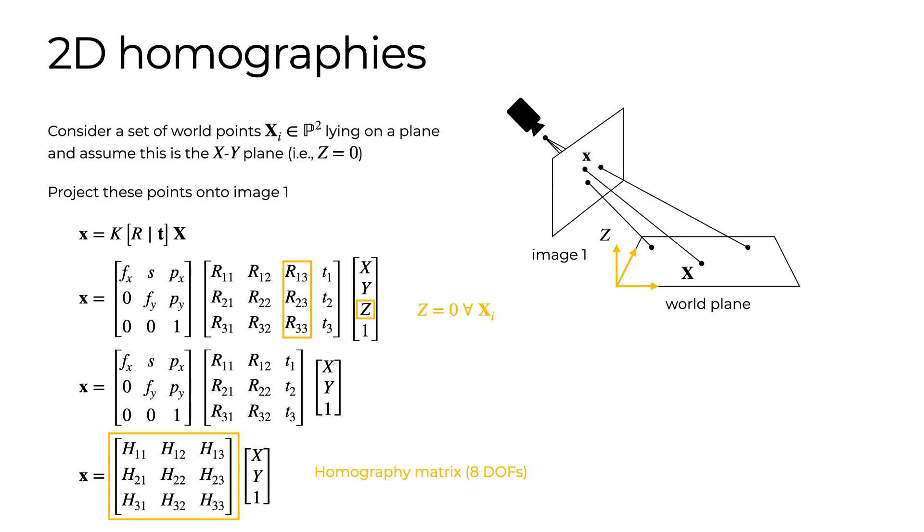Note that we derived the homography matrix as including both intrinsic and extrinsic parameters. We could just as well have written the transformation from world to image coordinates as a homography that maps points in the world plane to a plane in the camera's reference frame, followed by an intrinsic matrix that projects these points onto the image. In this case, we would estimate the extrinsic homography and the intrinsic matrix separately.